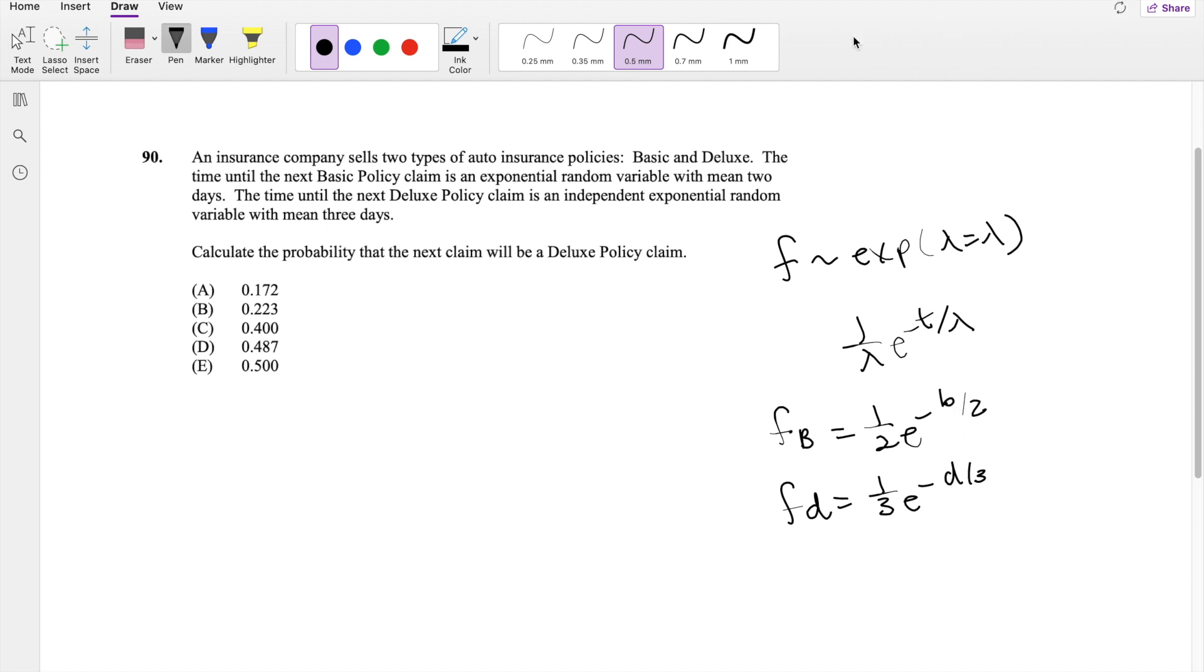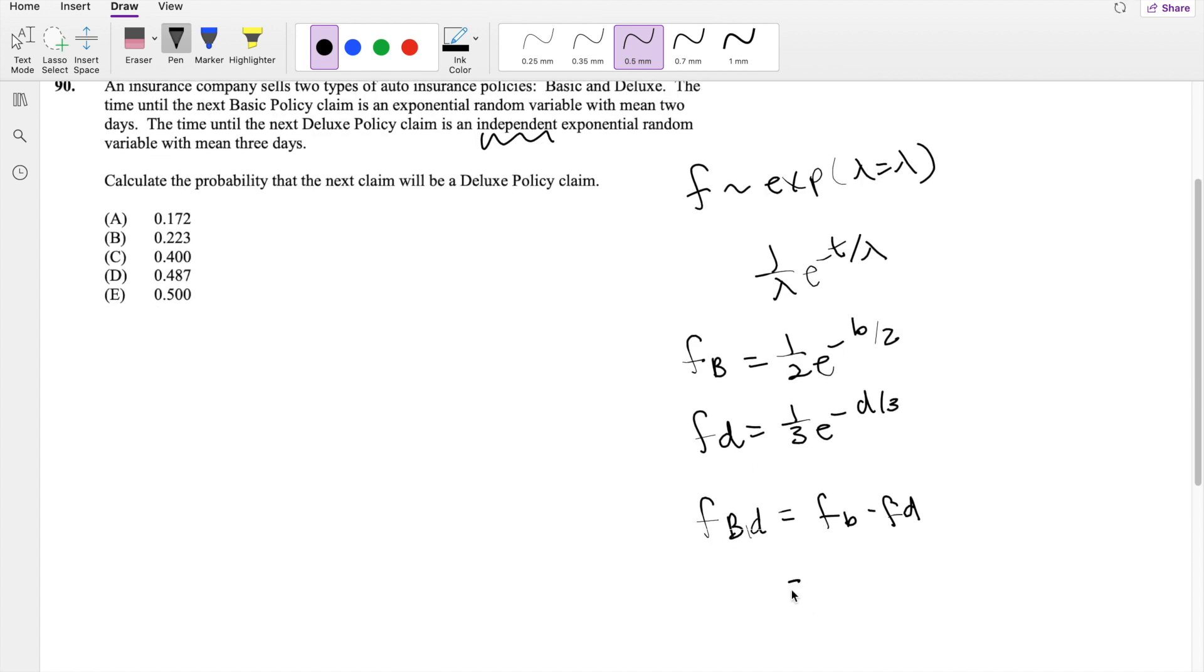And they also say that these are independent, a.k.a. the joint function, the f of b comma d, is just equal to the f of b times f of d. So then this is equal to 1/6 e to the negative b over 2 times e to the negative d over 3.